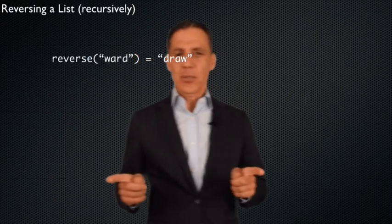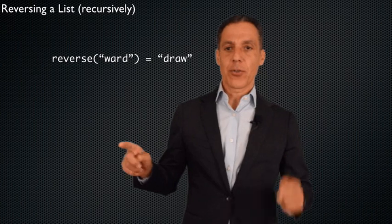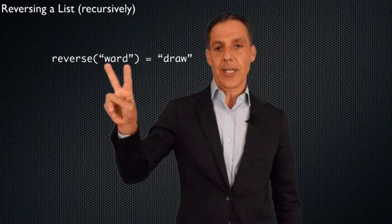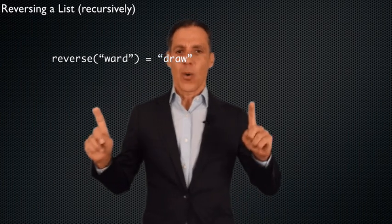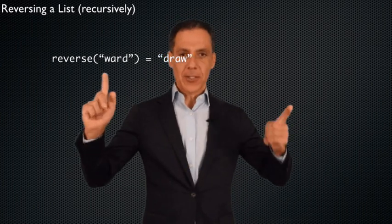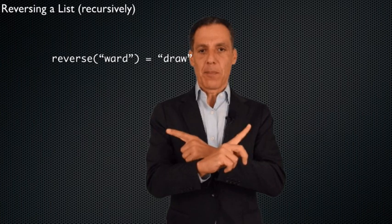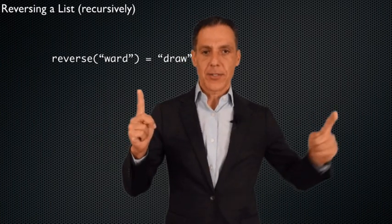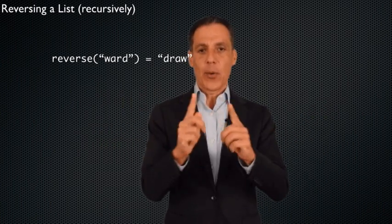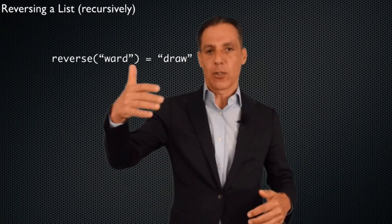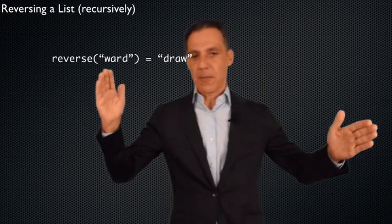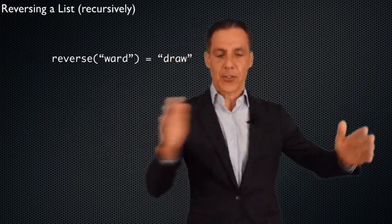Let's pick up where we left off and talk a little more about recursion. You may remember that we wrote an iterative algorithm for reversing a string — to reverse 'ward' to 'draw'. We took the first letter and the last letter and swapped them, then incremented one and decremented one, and kept going until we got to the midway point. We had a while or for loop working from the first letter to the midway point of the string, swapping all the way through.